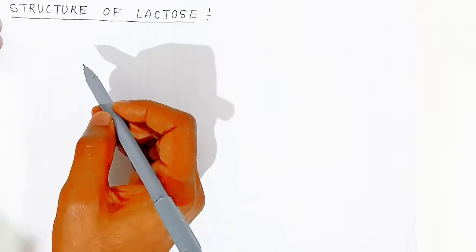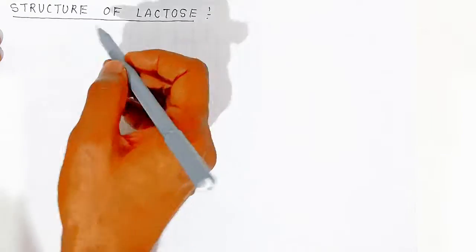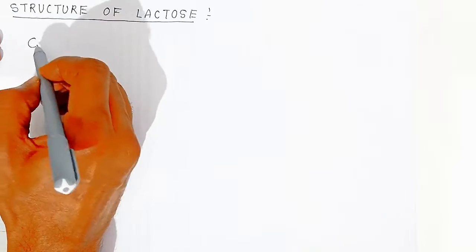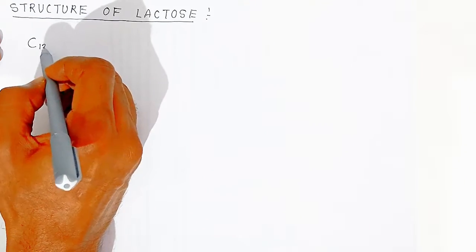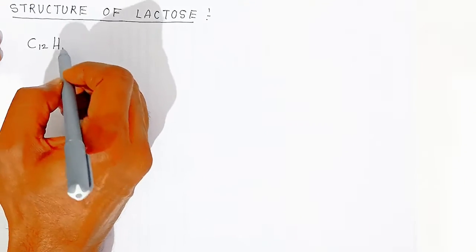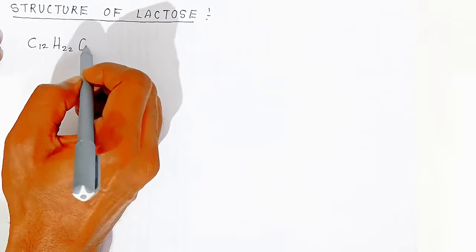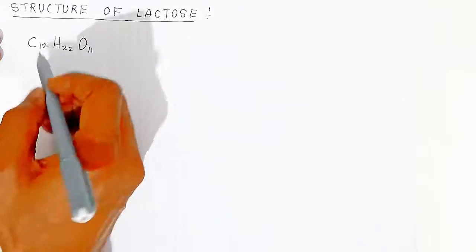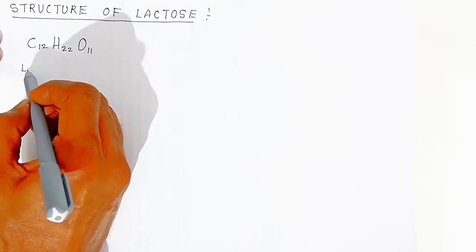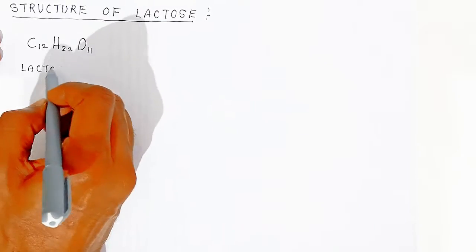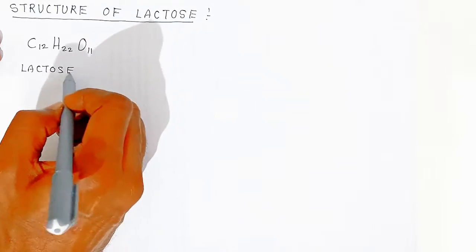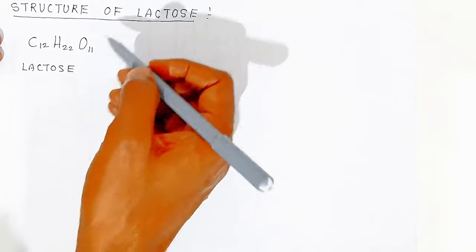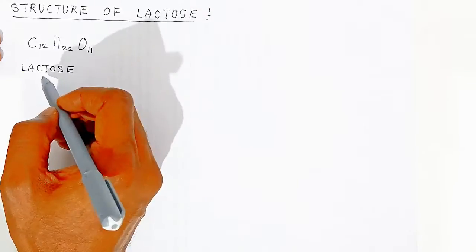For lactose, the molecular formula is C₁₂H₂₂O₁₁ — the same as sucrose and maltose. The molecular formula is the same but the structural formula is different.